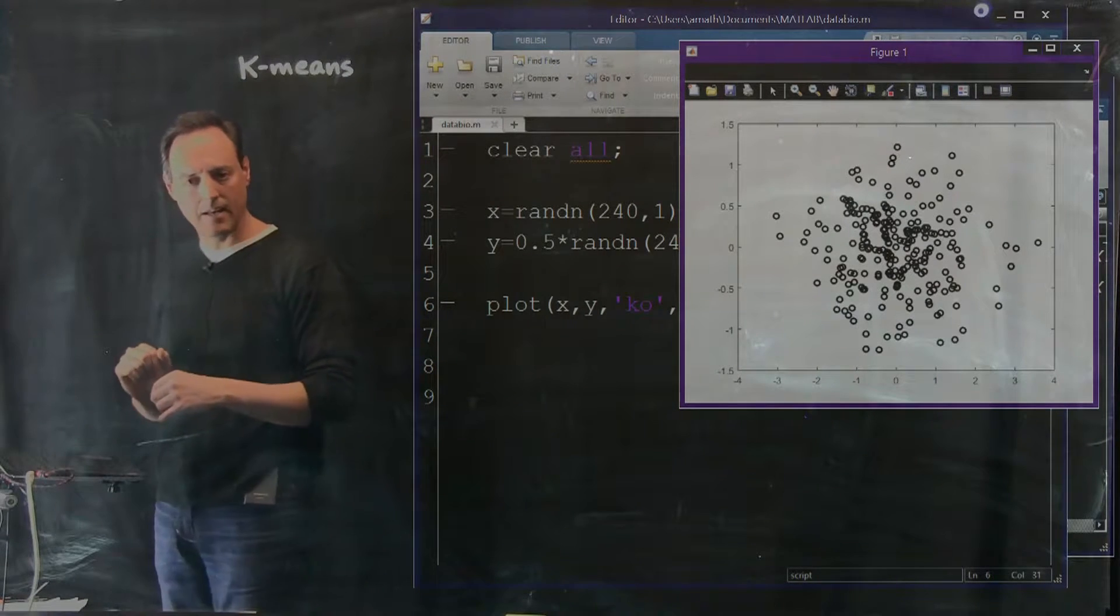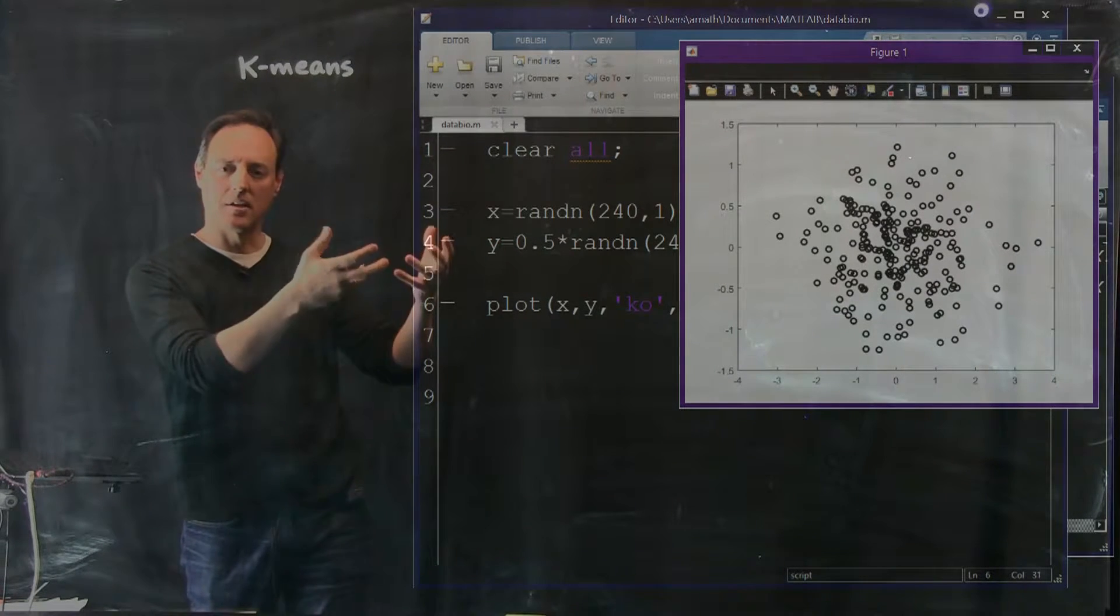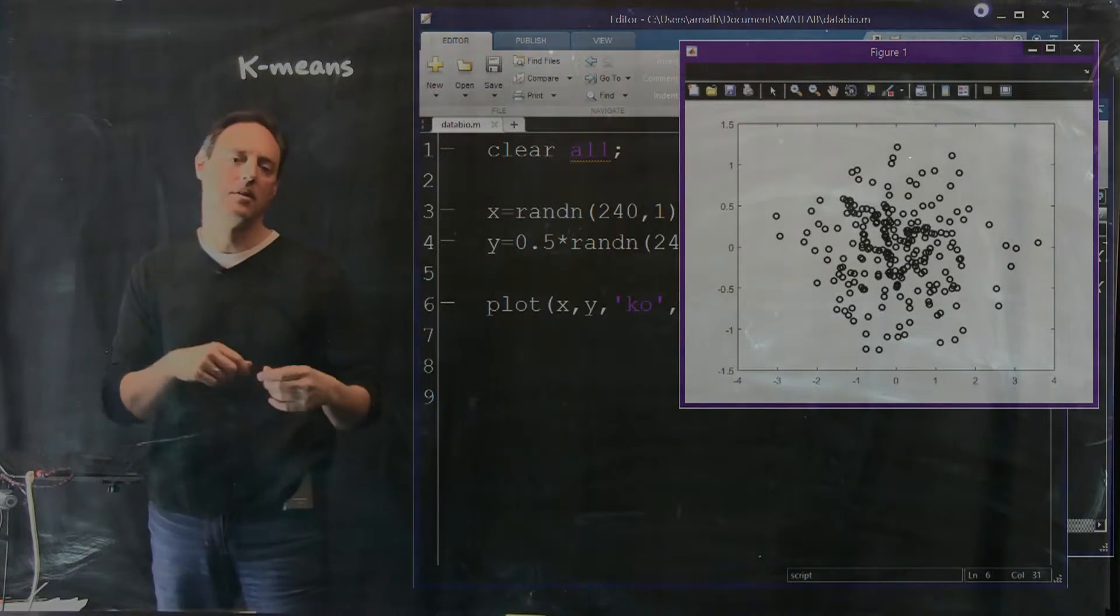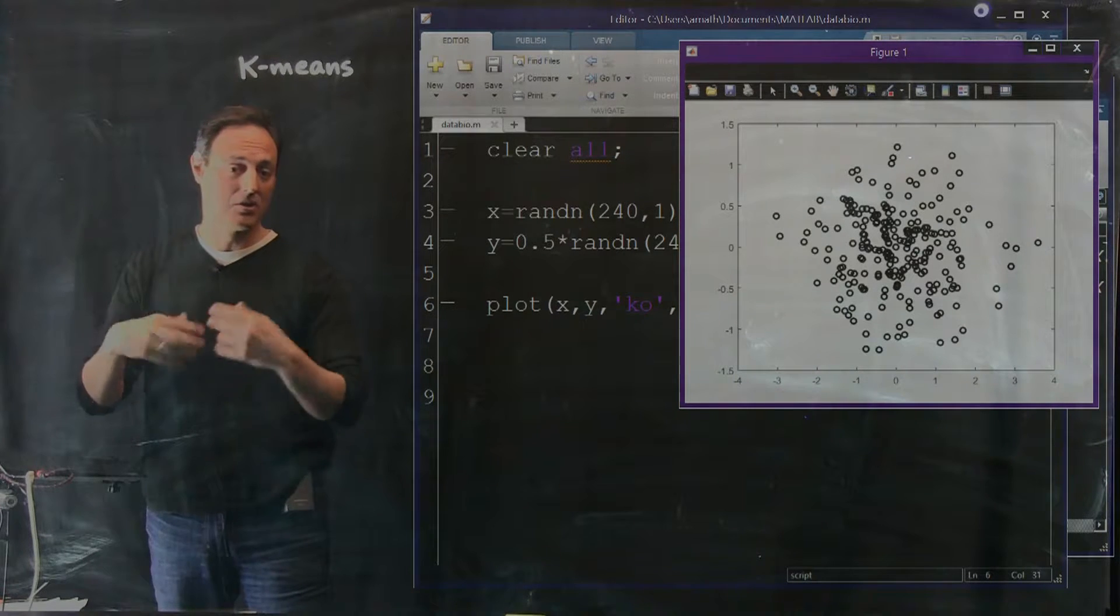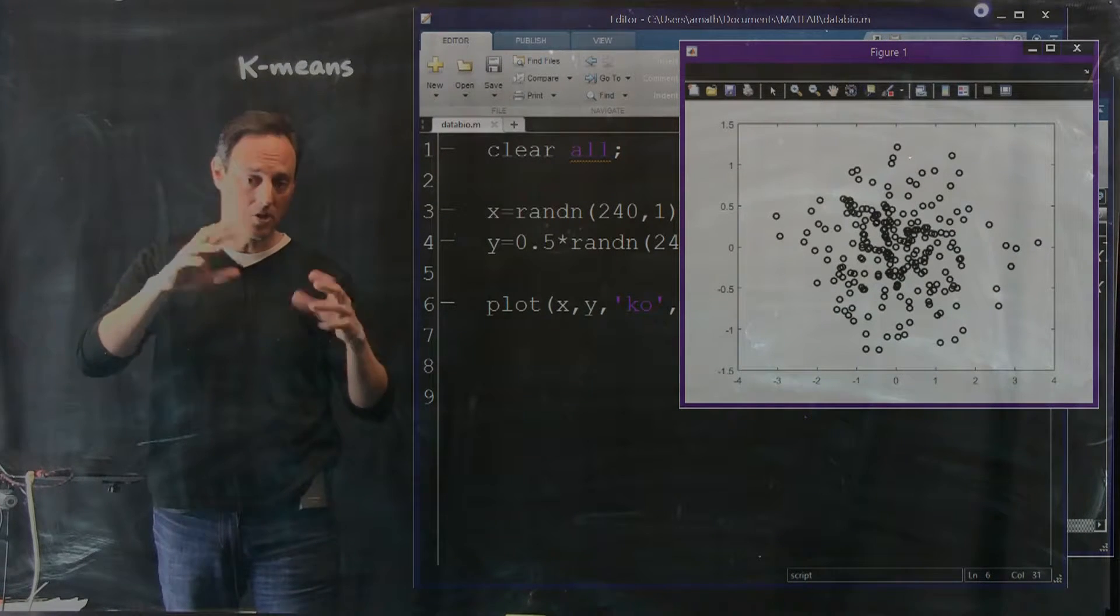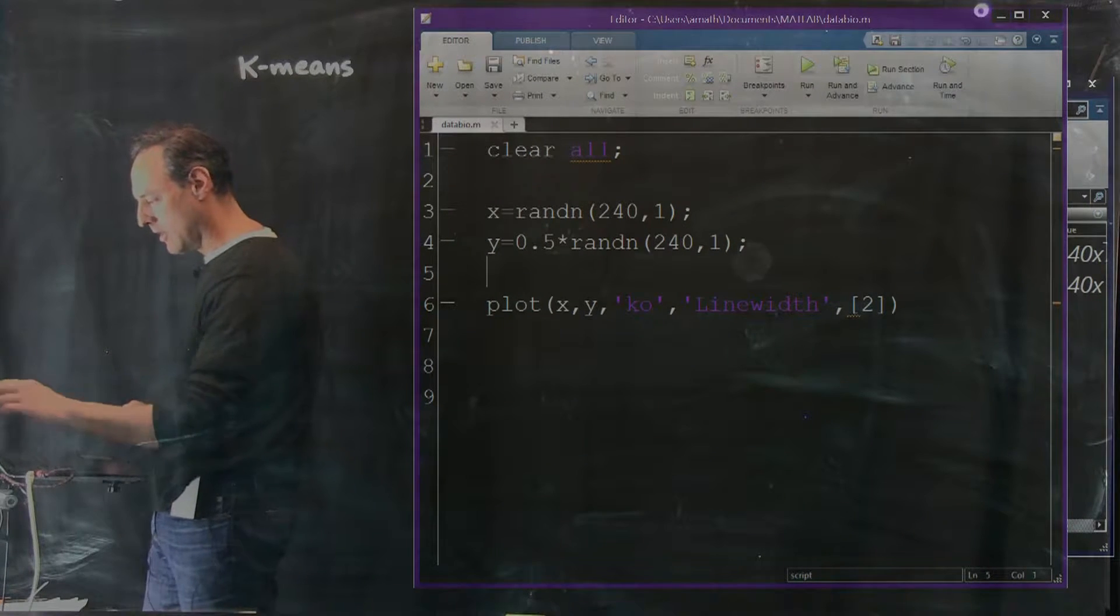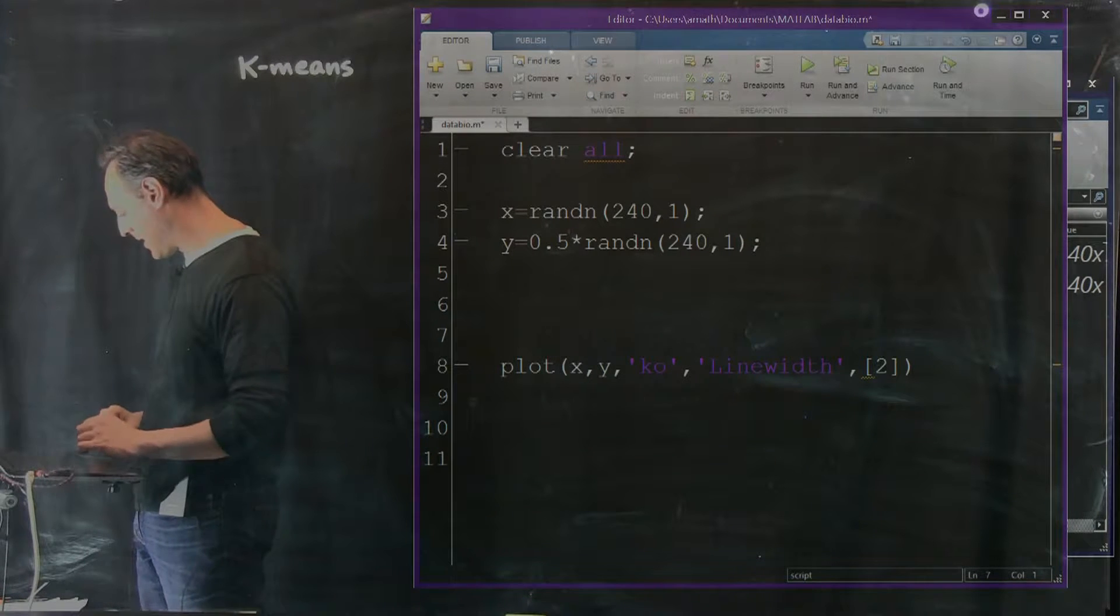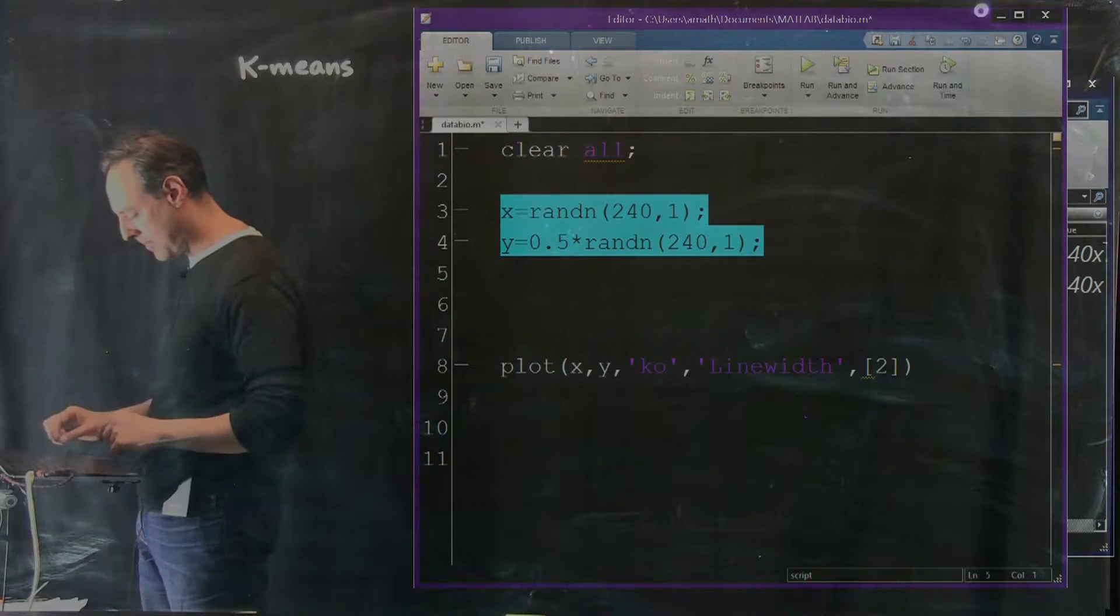So what this figure shows us is here's my distribution of points randomly generated. On the x-axis this goes from negative 4 to 4, whereas on the y-axis it goes negative 1.5 to 1.5. Let's make a second set. Suppose this x and y come from some kind of data, these are cats. And then we'll have x2, y2, which let's say are dogs.